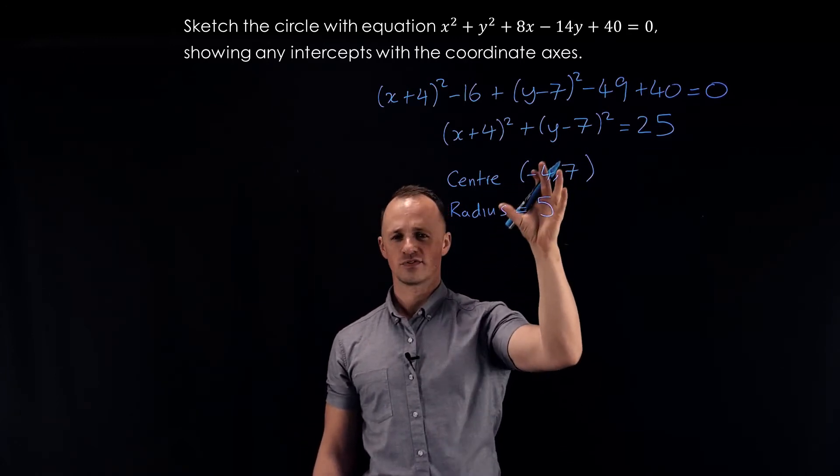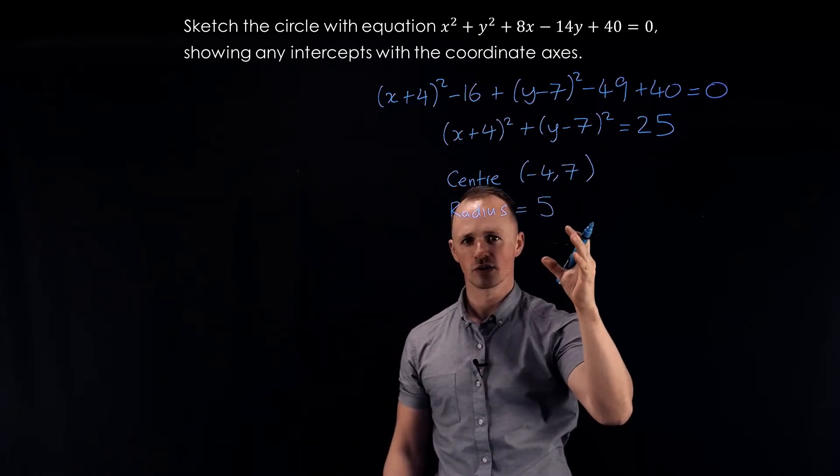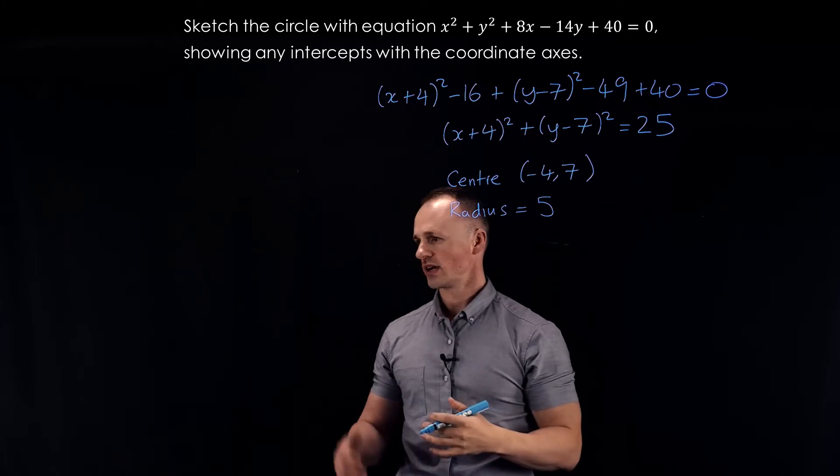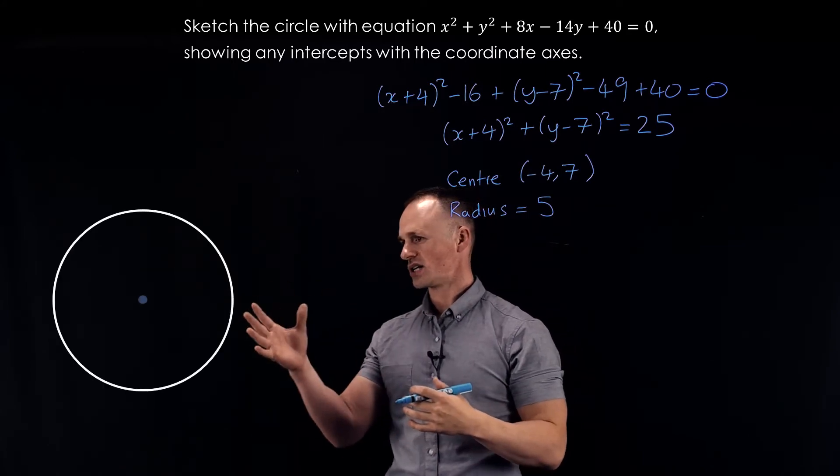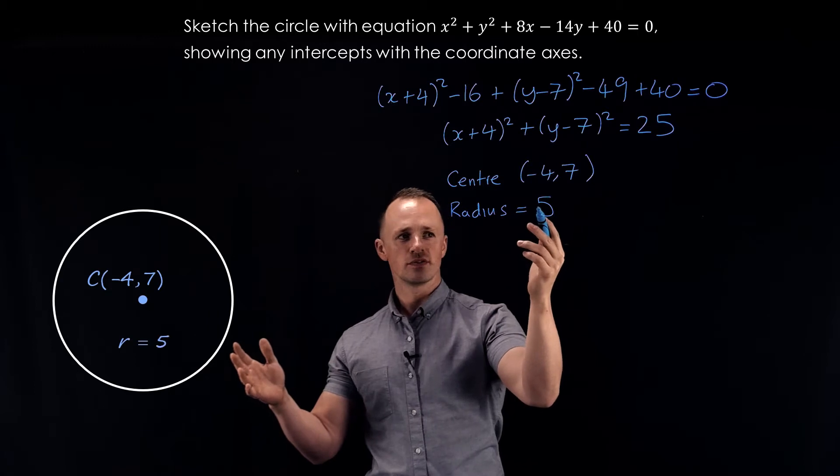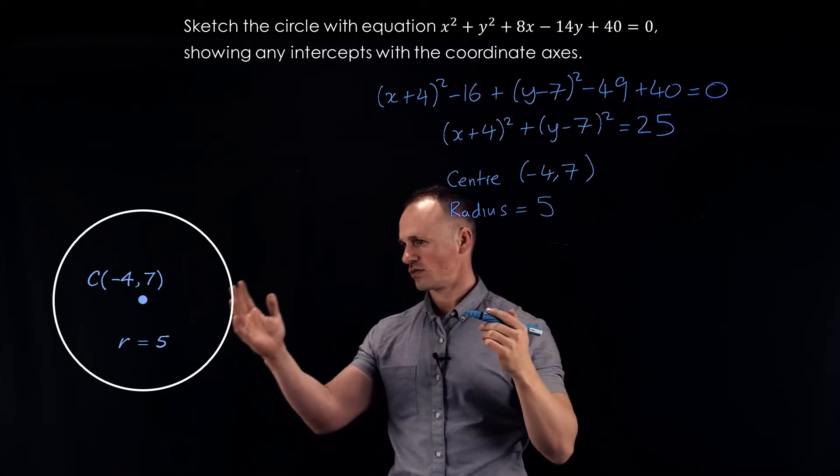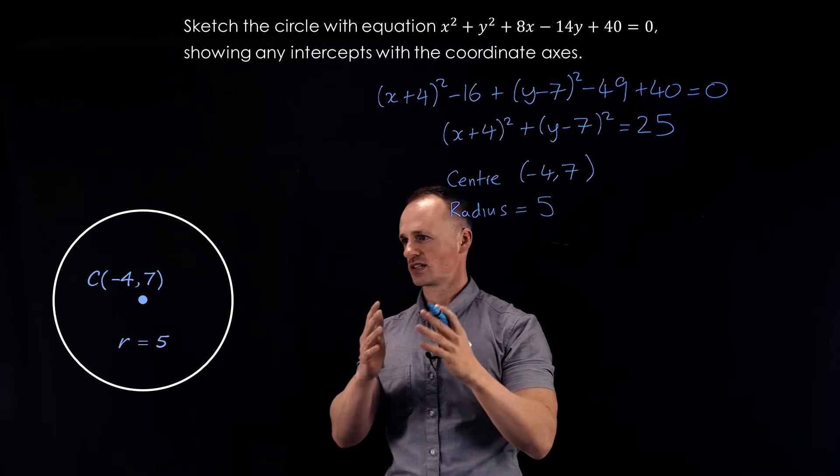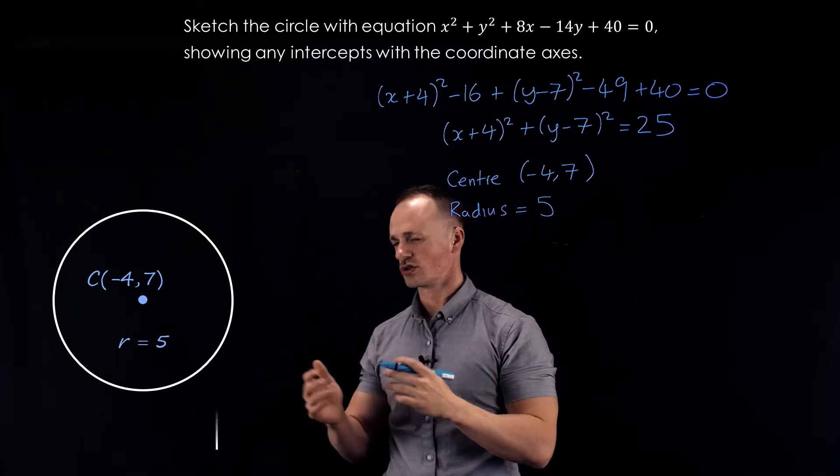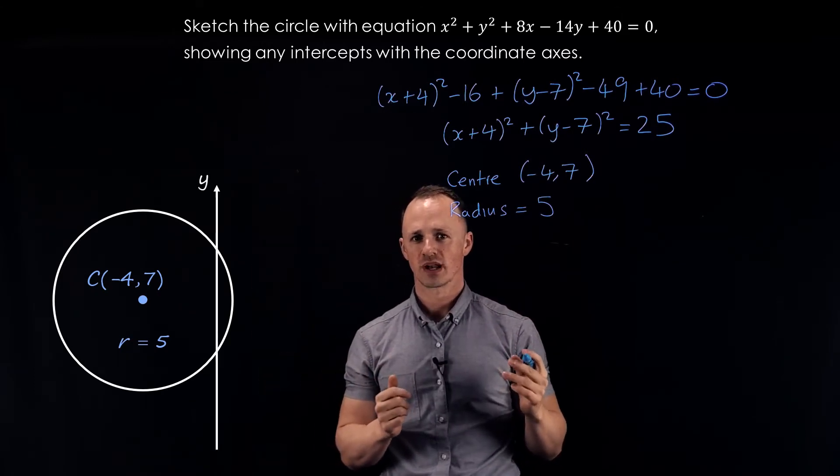So now that we've got this information, we can start thinking about what it's going to look like on a coordinate grid. So if we have the center at minus 4, 7, and we moved 5 units to the right, we would go past the y-axis. So the y-axis should cut the circle in two places.